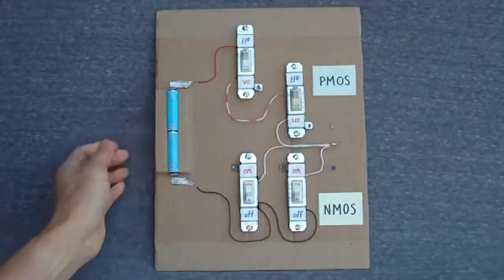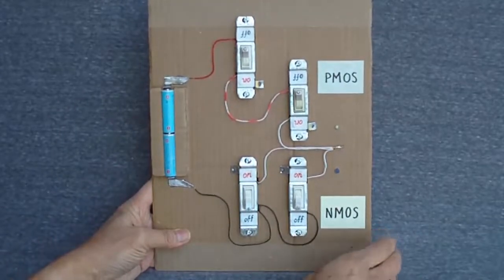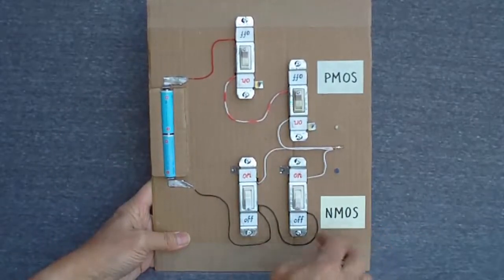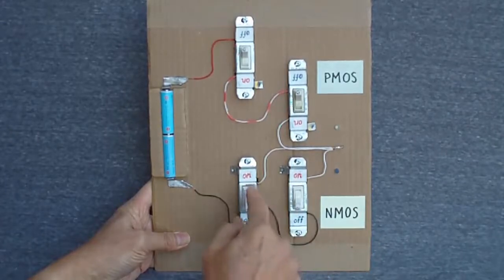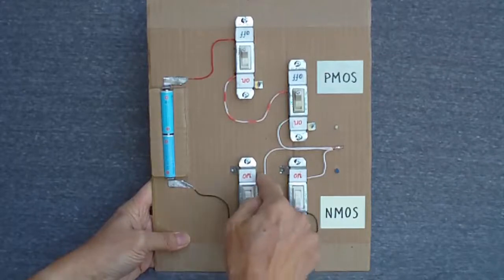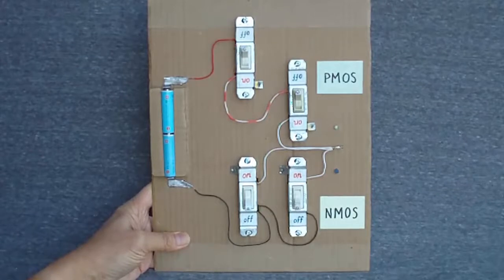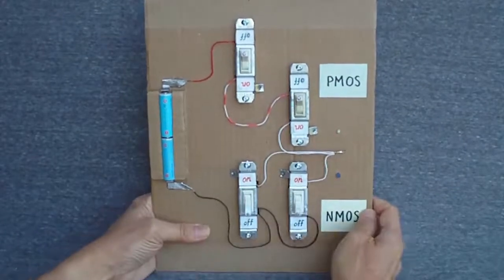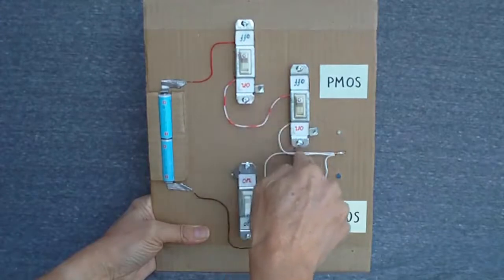Here we have a slightly more complicated circuit that performs the logical NOR function. At the bottom we have two NMOS transistors connected in parallel. The two sources are connected together to ground, and the two drains are connected together to the gate output. At the top we have two PMOS transistors connected in series, end-to-end, from the power supply to the gate output.